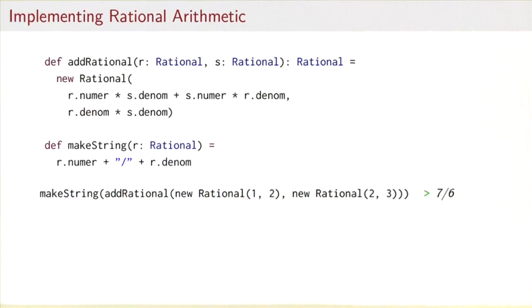So now we can write new Rational(1, 2), new Rational(2, 3), add the two with addRational, produce a string with makeString, and we would get 7/6 following the usual arithmetic laws.